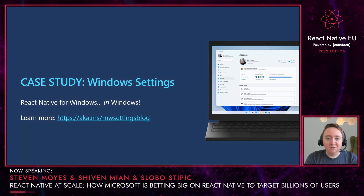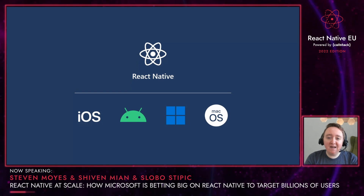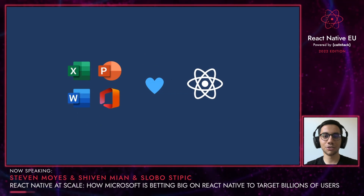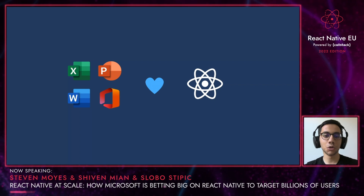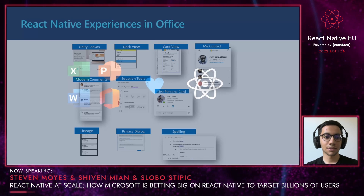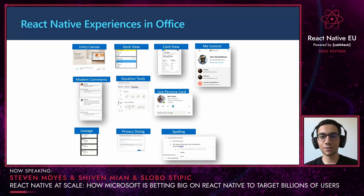Microsoft is investing across the breadth of React Native platforms, not just desktop. I'd like to pass the microphone over to my partner Shivan, who will explain how the Office team is using and improving upon RN for mobile. So I'll be talking about another Microsoft product line used by millions across the world, and that is Office. We've invested heavily in React Native for building new experiences for Office over the last few years, especially on the Word, Excel, PowerPoint, and the Office mobile apps. And we're still growing. Here are just a few of the experiences running on Office applications, all powered by React Native.